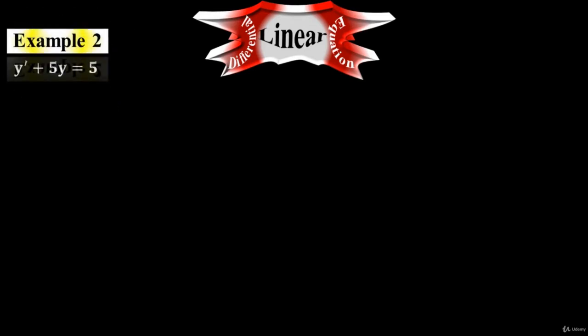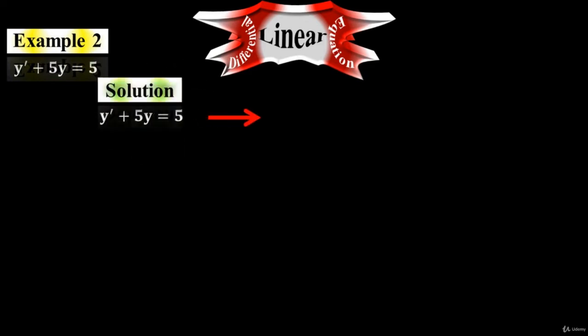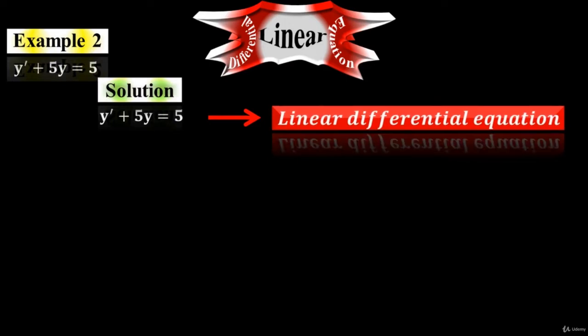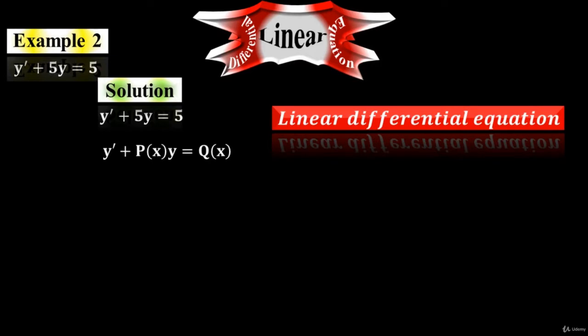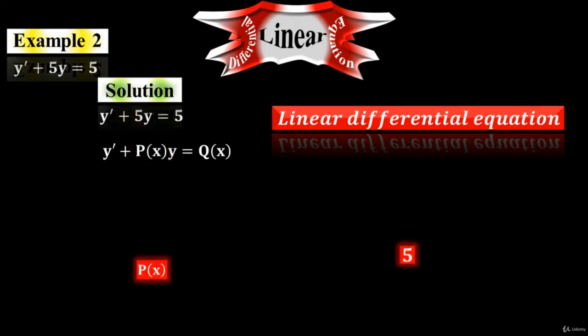Example number two: y prime plus 5y equals to 5. This is a standard linear differential equation. Just compare it with the formula y prime plus P of x times y equals to Q of x. P of x is 5 — it is a constant, not an x term. As I mentioned in the introduction, P of x can be a constant, and Q of x can also be a constant. Just make sure it should not be a dependent variable — it can be x or it can be a constant.